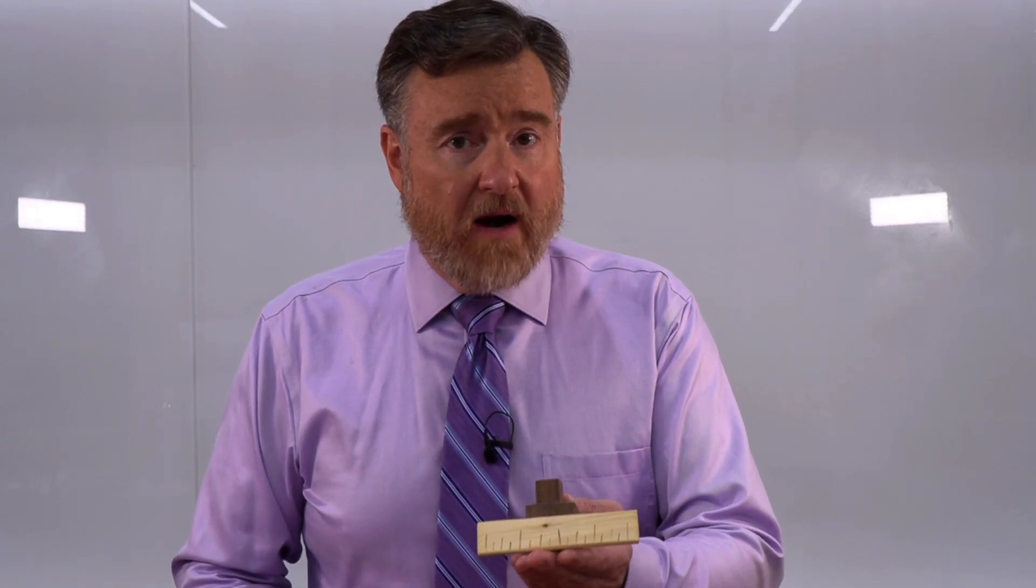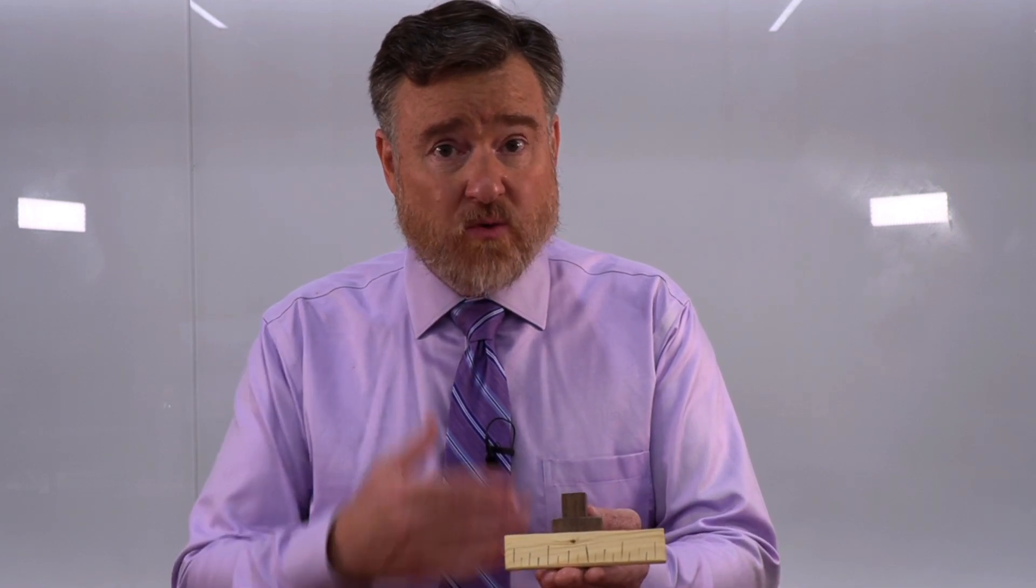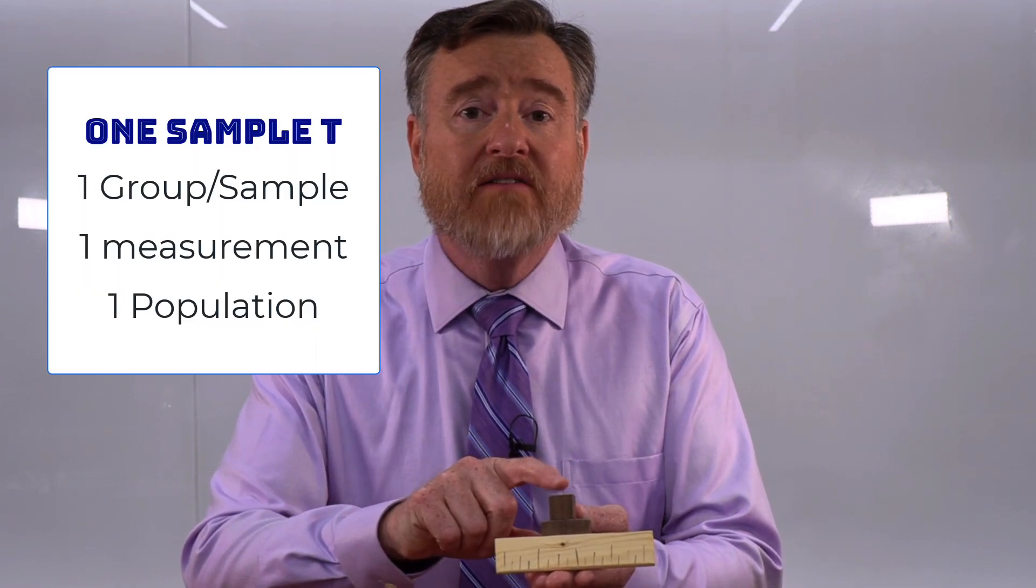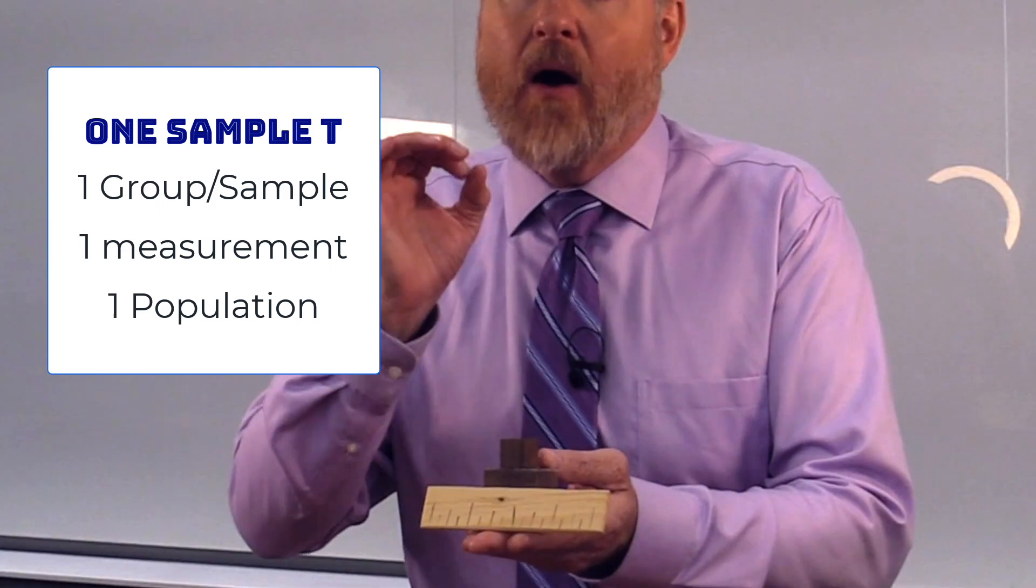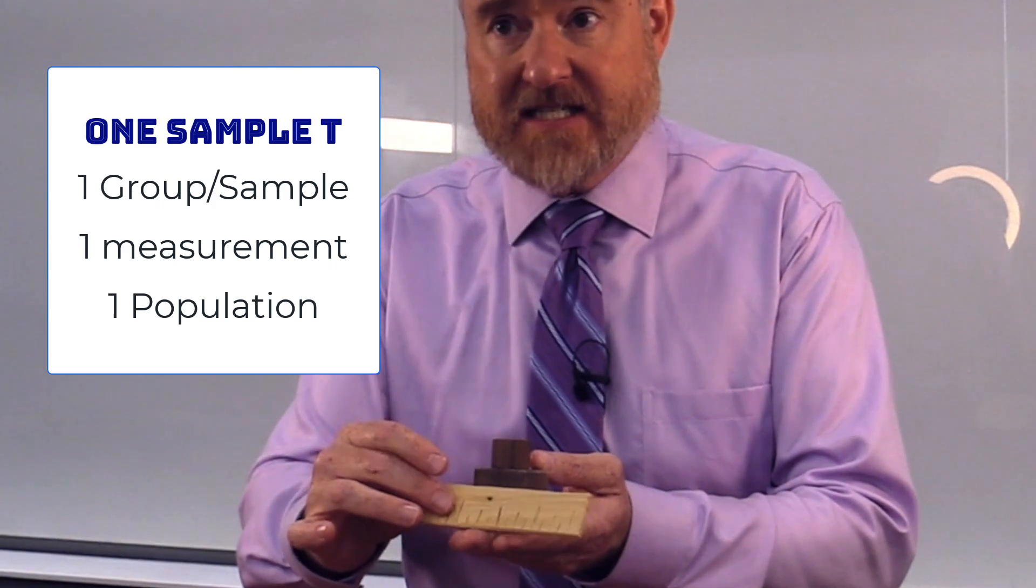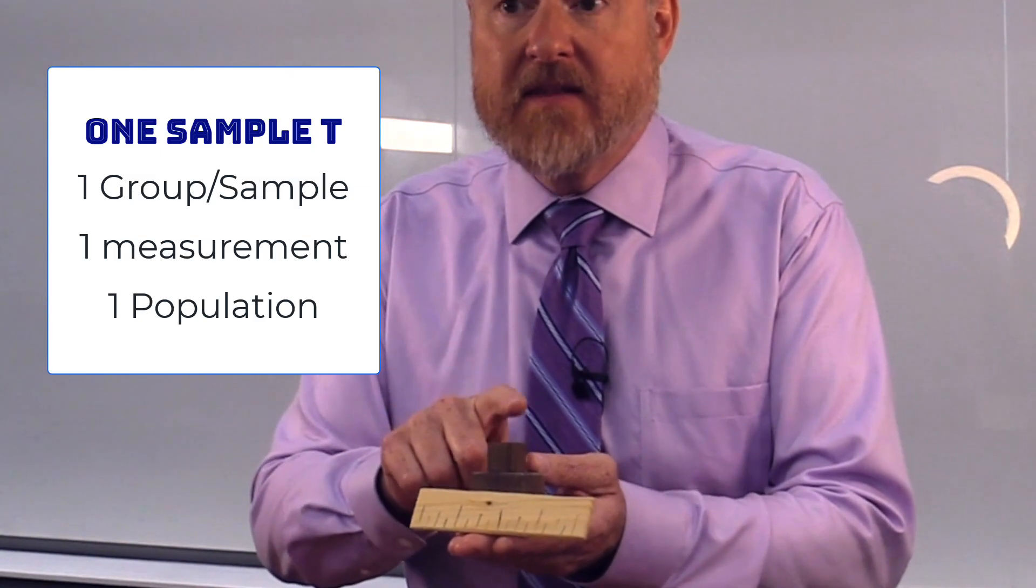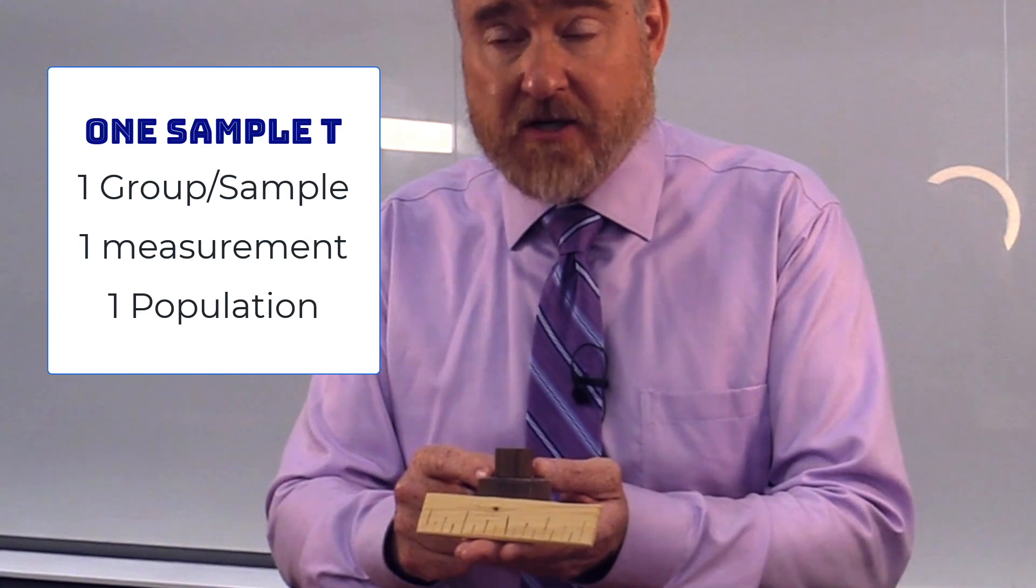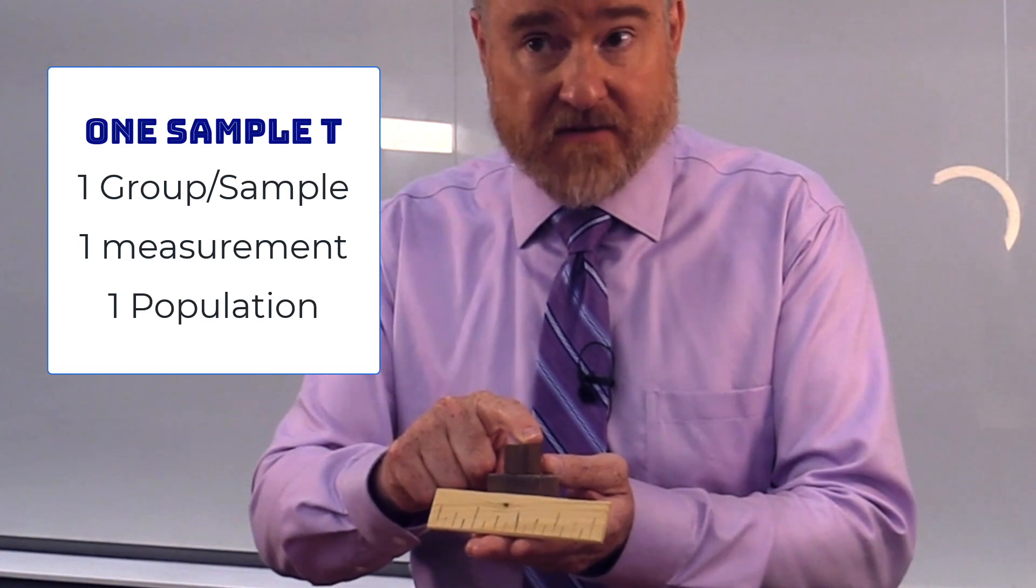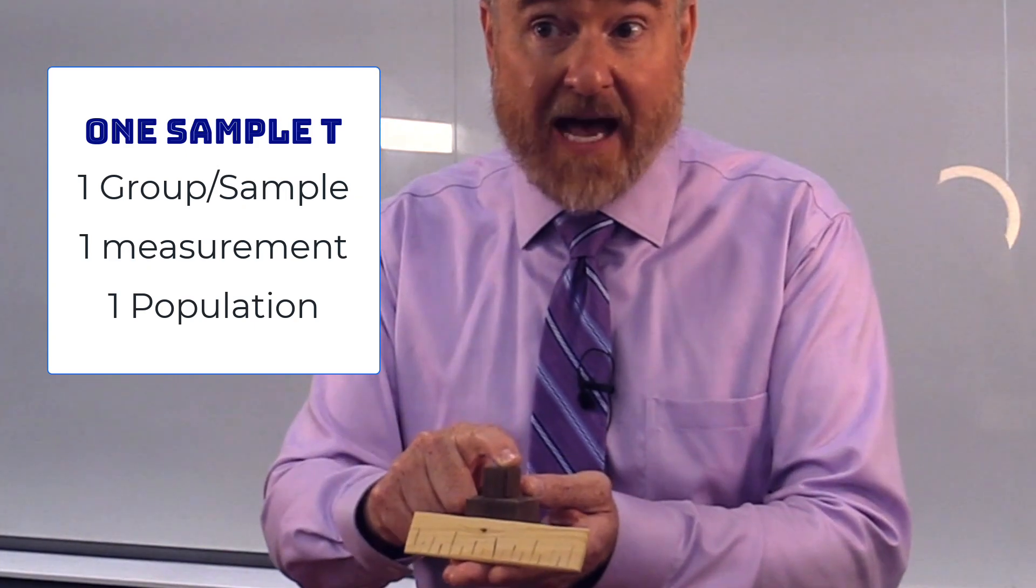The basic setup for a one sample t-test works like this. We have a sample that has been drawn from the population. Our dependent variable is a scale measure of this sample. We know the mean of the population and, of course, we know the mean and standard deviation of the sample because we can compute that.